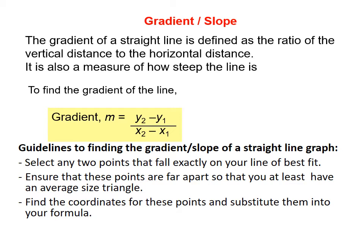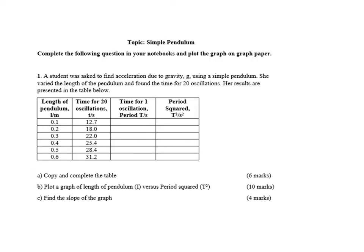So let's look at our previous example. This was the question we have been working. We had completed the table and we did go through how we would plot the graph of length of the pendulum versus period squared. And if you have not seen that video, you want to check out the video before this one that is entitled How to Plot Graphs. So now we're looking at how to find the slope or the gradient of the graph. And please be familiar with the two terms. You can be asked either of them to find the gradient or to find the slope. It's referring to the same thing.